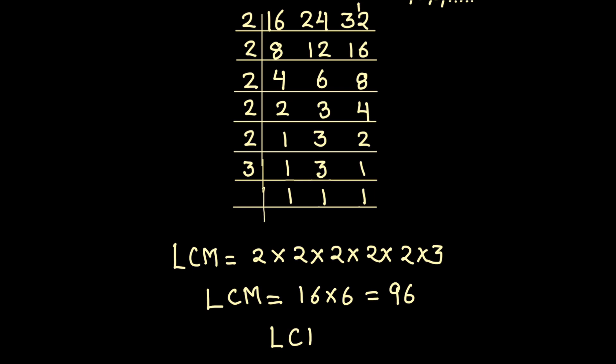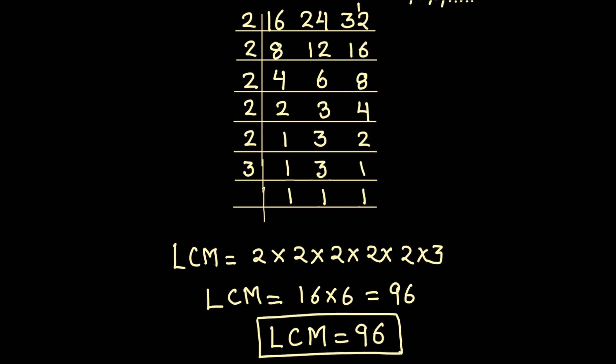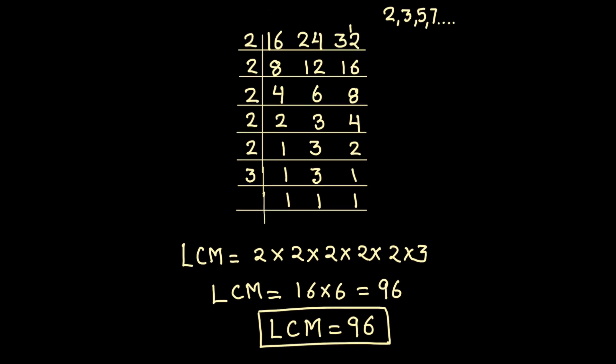So this is our final answer — the LCM of the three numbers 16, 24, and 32 is 96. And this is how we can find the LCM of any numbers using prime factorization. I hope this video is helpful to you. If you like the video, please hit the like button and subscribe to my channel for more math videos. Thanks for watching.